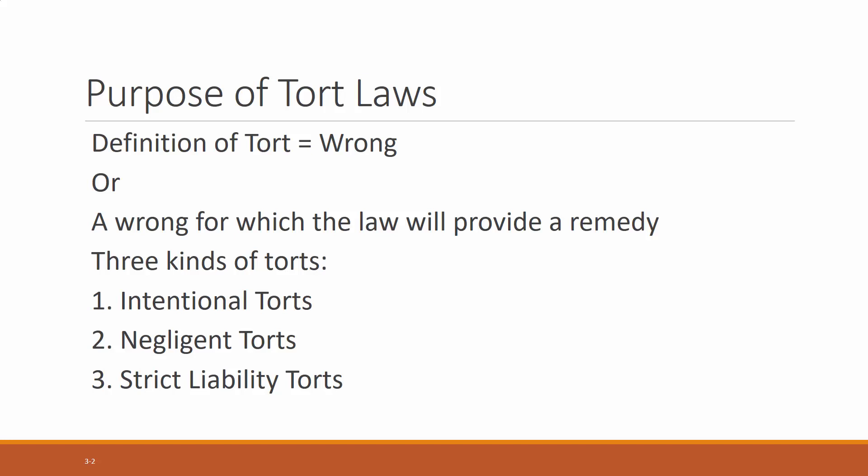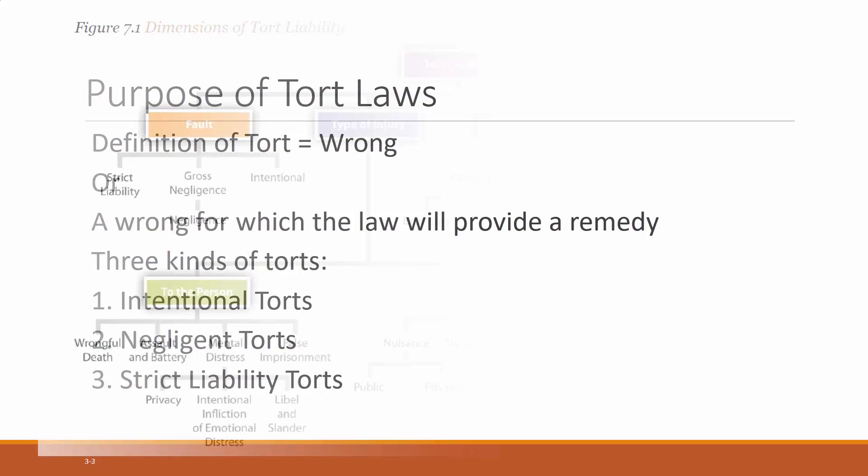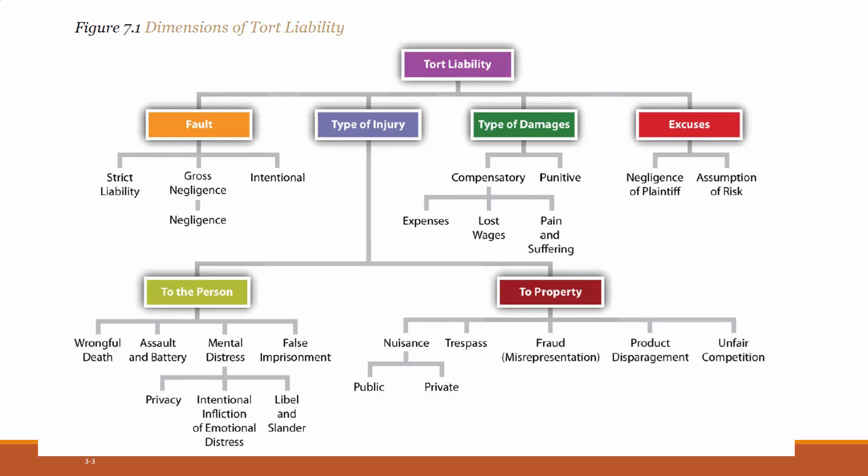In the modern court system, usually when you say a tort, you mean a wrong for which the law will provide a remedy. There are lots of things in the world that are wrong, but only certain things for which we can really provide a remedy at law. The book breaks it into three types: intentional torts, negligent torts, and strict liability torts. We'll talk about each of those — this structure is taken straight out of the book, and it's how the whole chapter is organized.